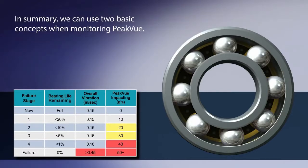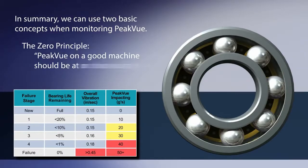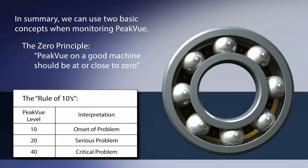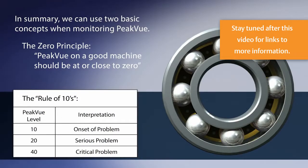In summary, we can use two basic concepts when monitoring peak view: the zero principle — peak view on a good machine should be at or close to zero — and the rule of tens.